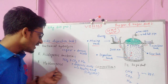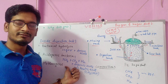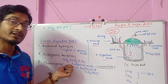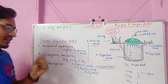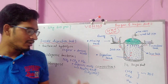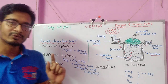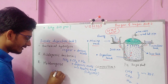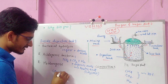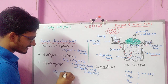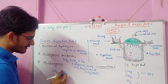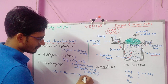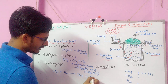Next, methanogens start to play their role. Methanogens are microorganisms which produce methane gas. When methanogens act on carbon dioxide and hydrogen, they form methane gas (CH4) and water vapor.